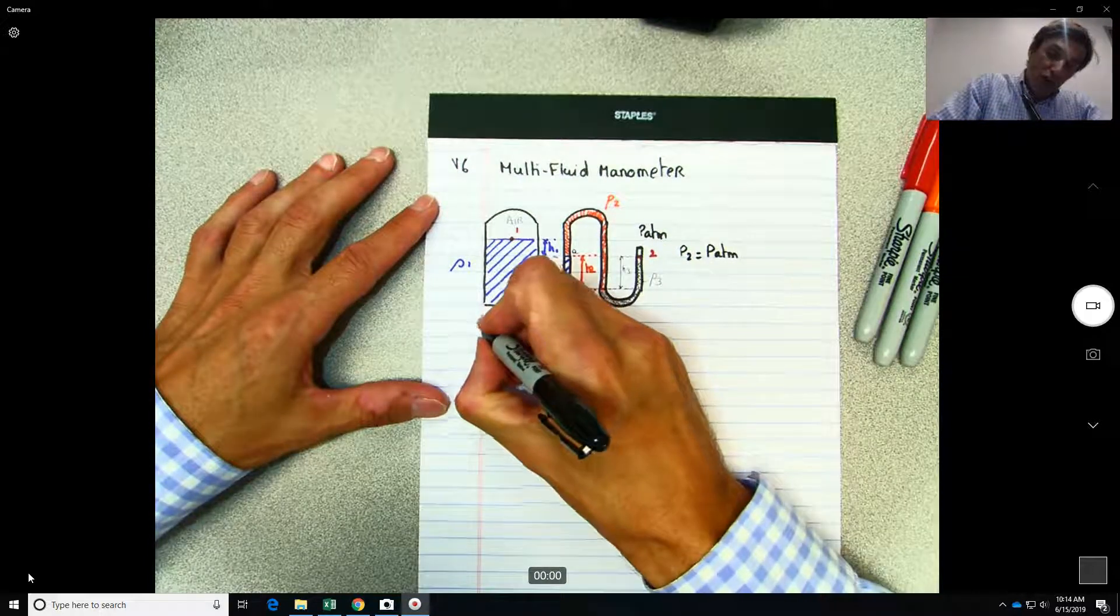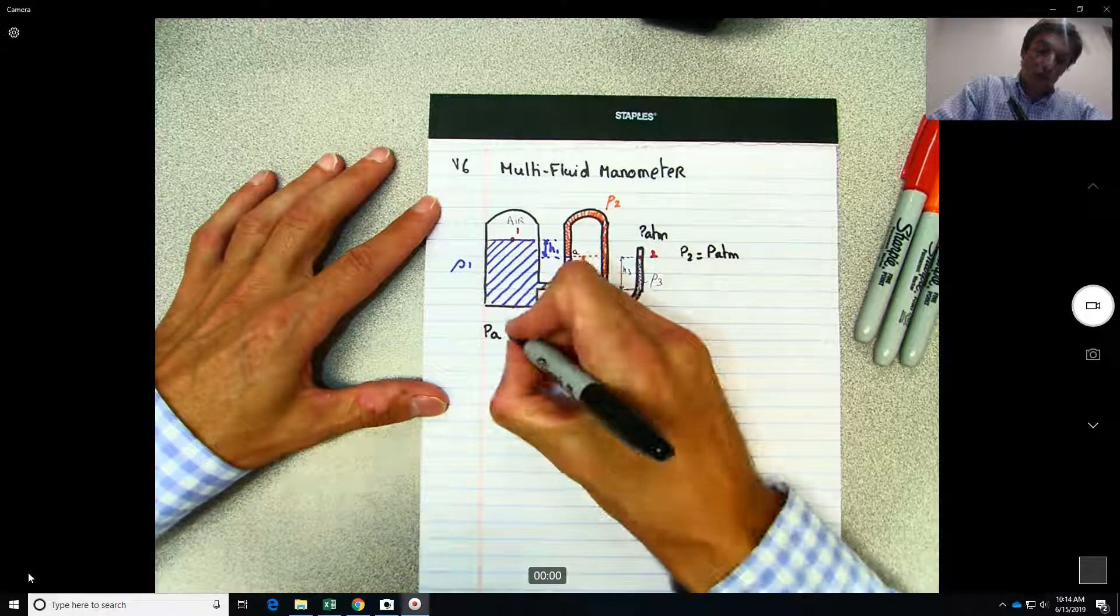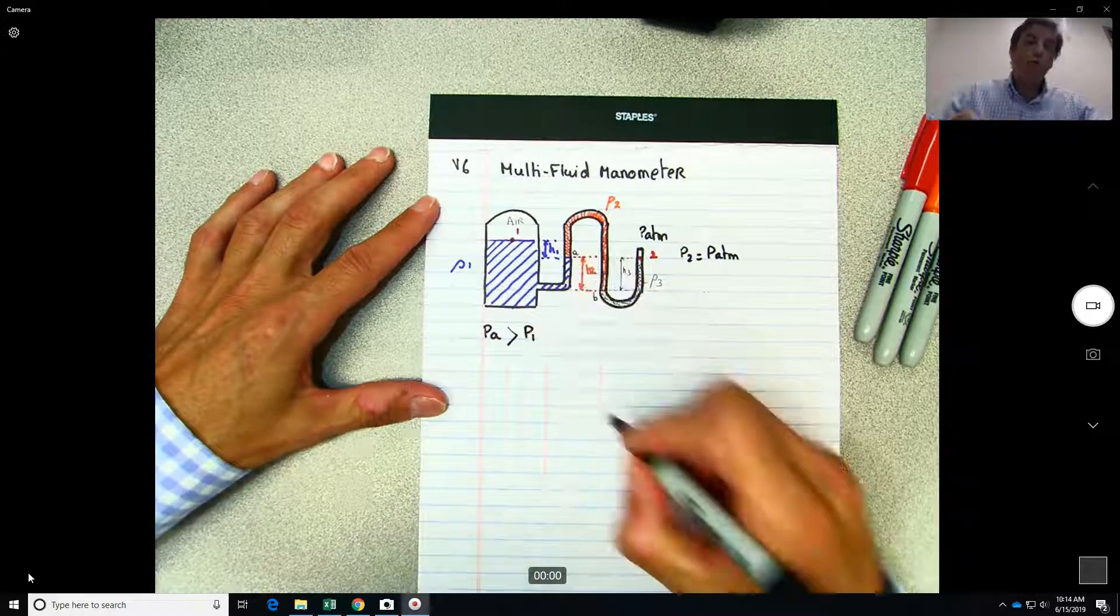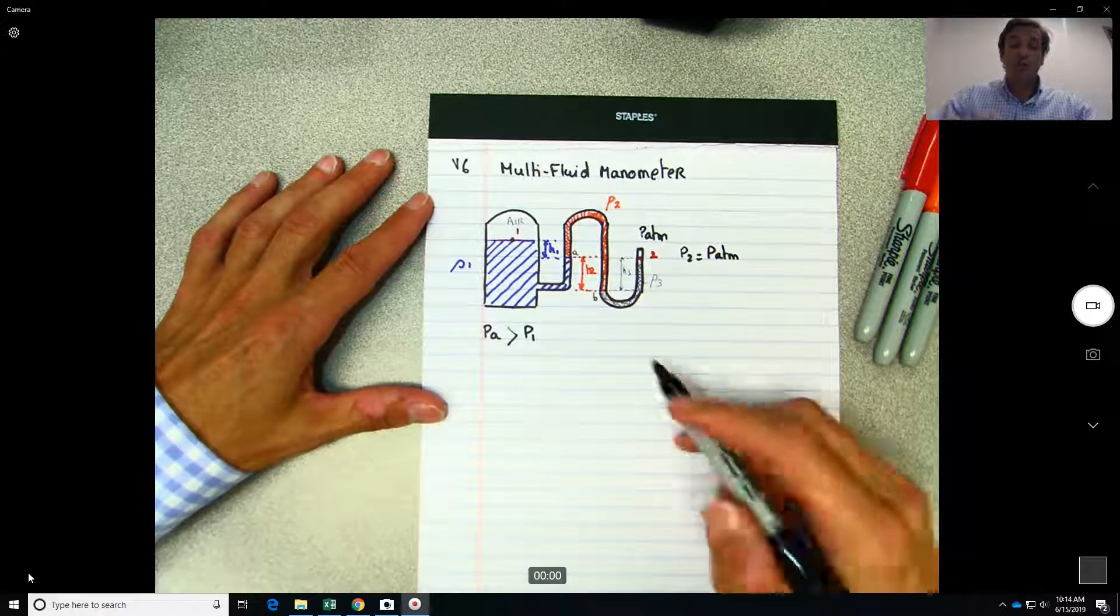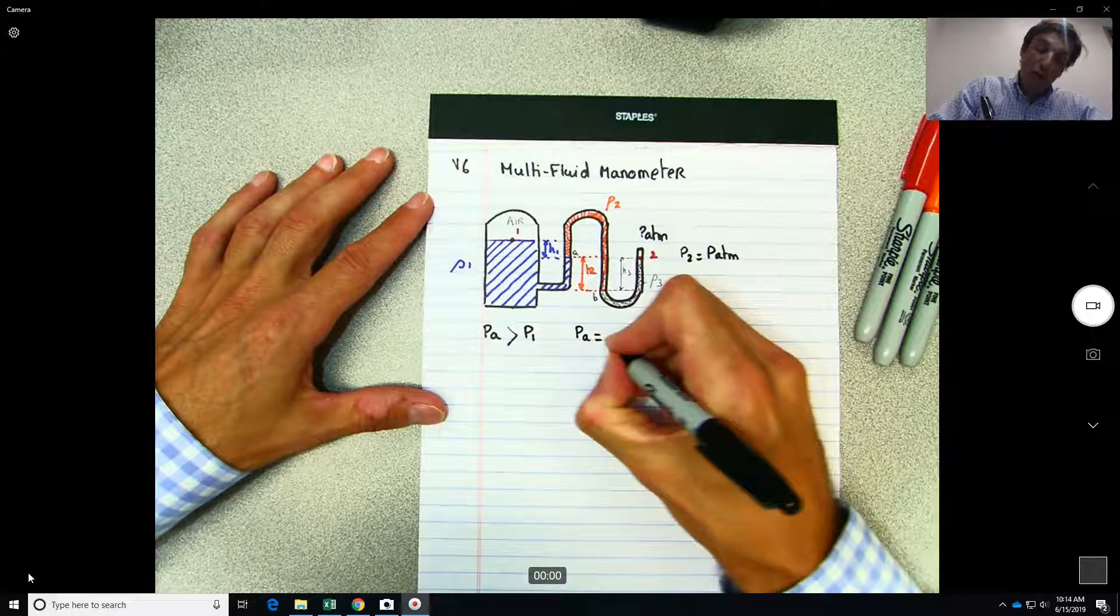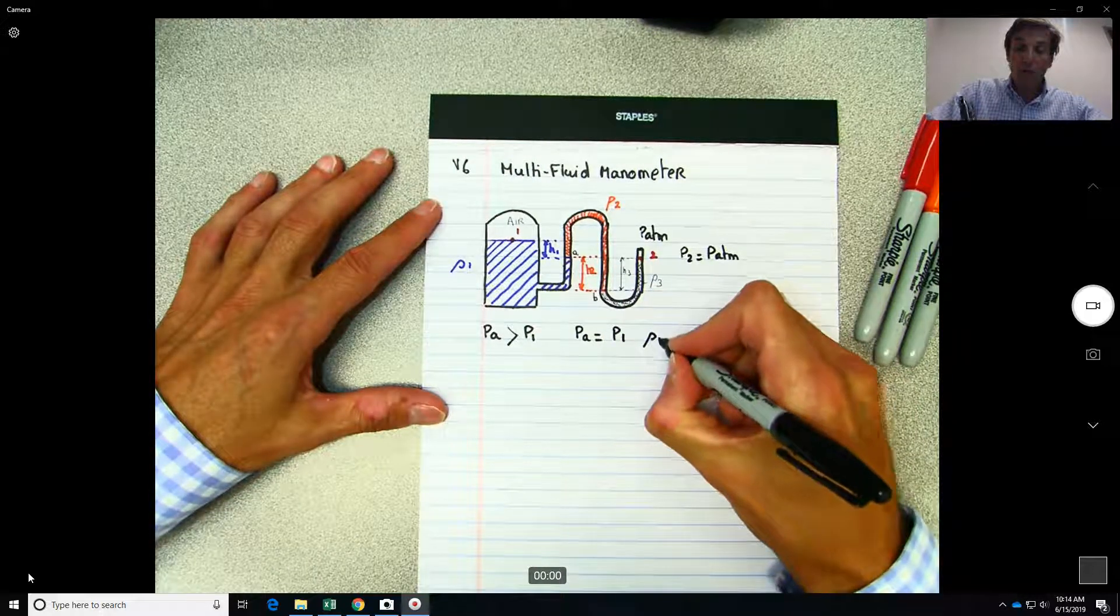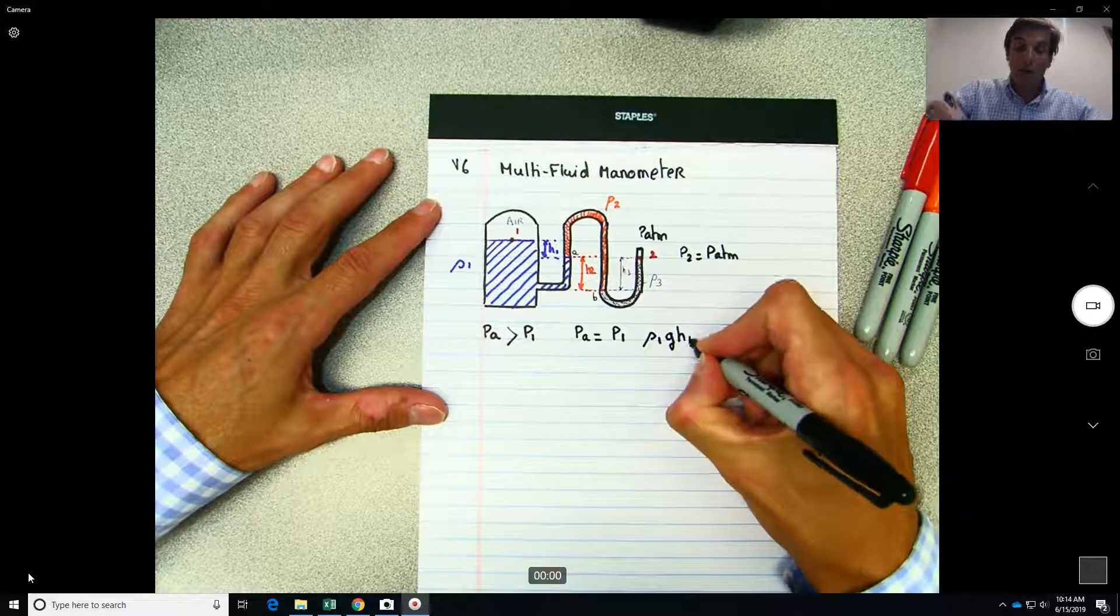And by how much is it bigger? So we can write down PA should be equal to what? P1, and then we have, what is the fluid here? Rho one G.